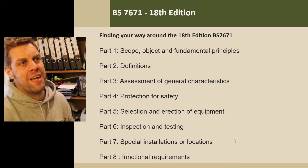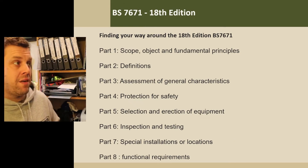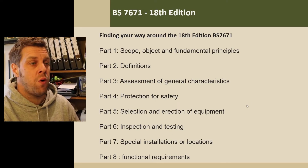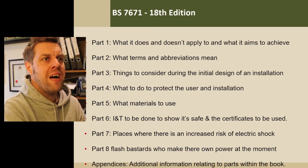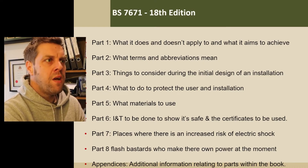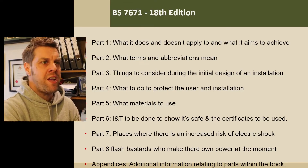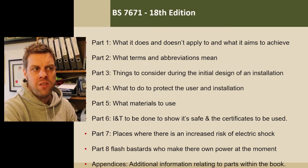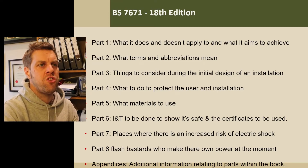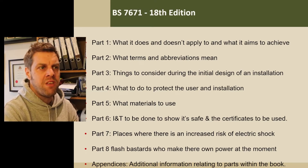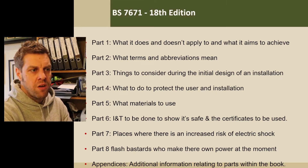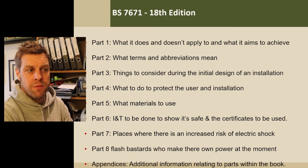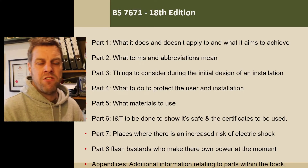But what do they mean in English? I've compiled this list and I'm going to put this on a downloadable document - look in the comments or description. Part one: what it does and doesn't apply to and what it aims to achieve. Part two: what terms and abbreviations mean. Part three: things to consider during the initial design and installation and the supply stuff. Part four: what to do to protect the user and the installation. Part five: what materials to use and how to use them. Part six: inspection and testing to be done to show it's safe and the certificates to be used. Part seven: places where there's an increased risk of electric shock. Part eight: flash bastards who make their own power. And then the appendices at the end: additional information relating to parts within the book.